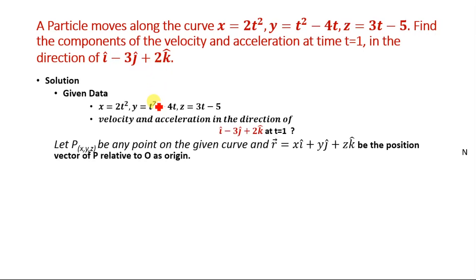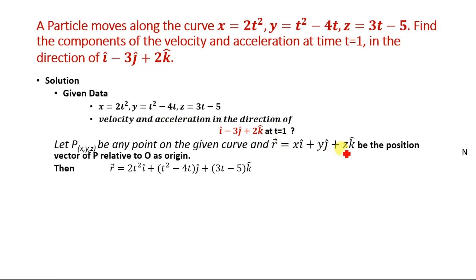Let P(x, y, z) be any point on the given curve and r be the position vector of point P relative to origin O. Then r = xi + yj + zk. Substituting x = 2t², y = t² - 4t, and z = 3t - 5, we get r = 2t²i + (t² - 4t)j + (3t - 5)k.